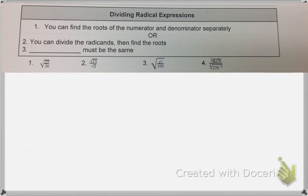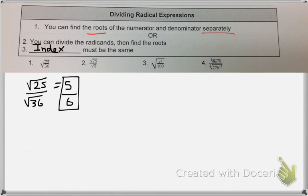So when you're dividing, it's the same rule as when you're multiplying. Your index needs to be the same. So I want to point out that sometimes you can take the roots of the numerator and denominator separately. Sometimes that's the easiest way to do it. For example, in number 1, I think it's a lot easier to take the square root of 25, which is 5, and the square root of 36, which is 6 separately. And your answer is just 5 over 6.